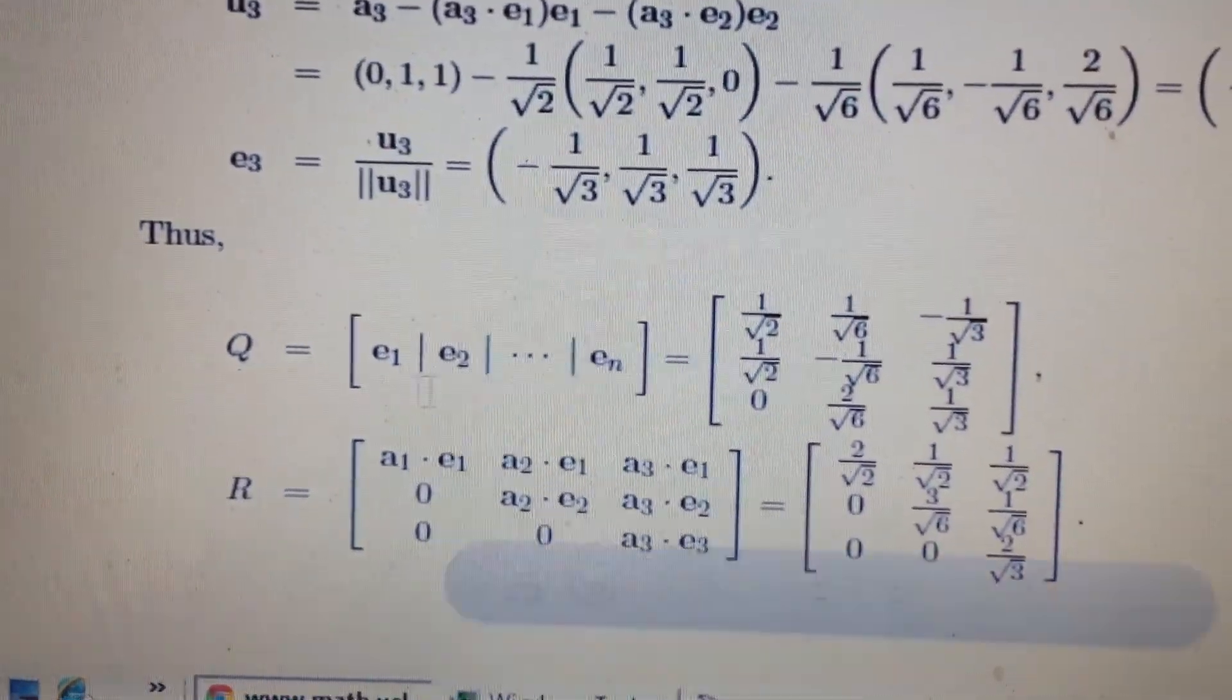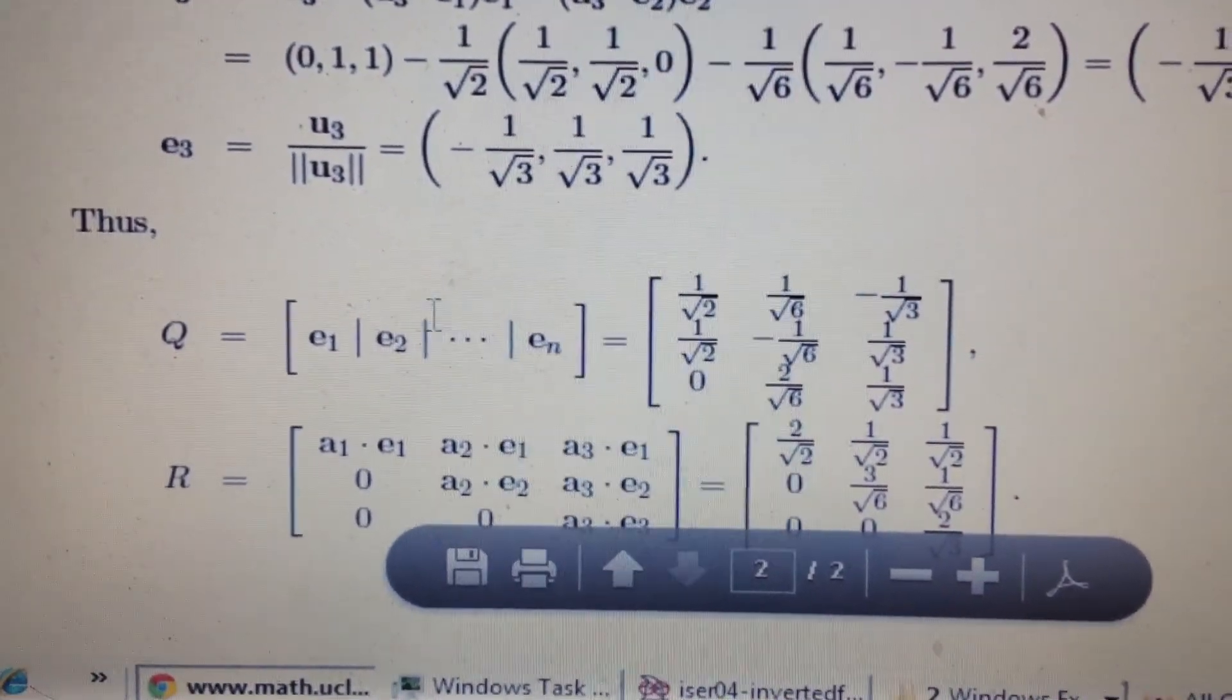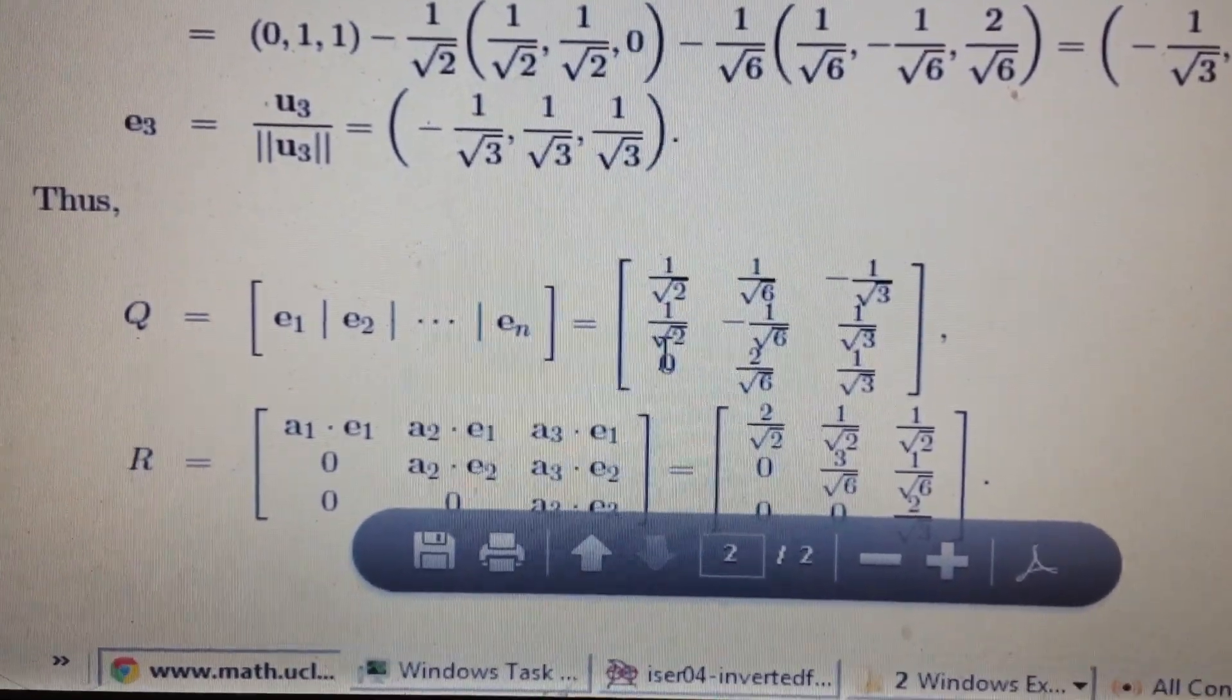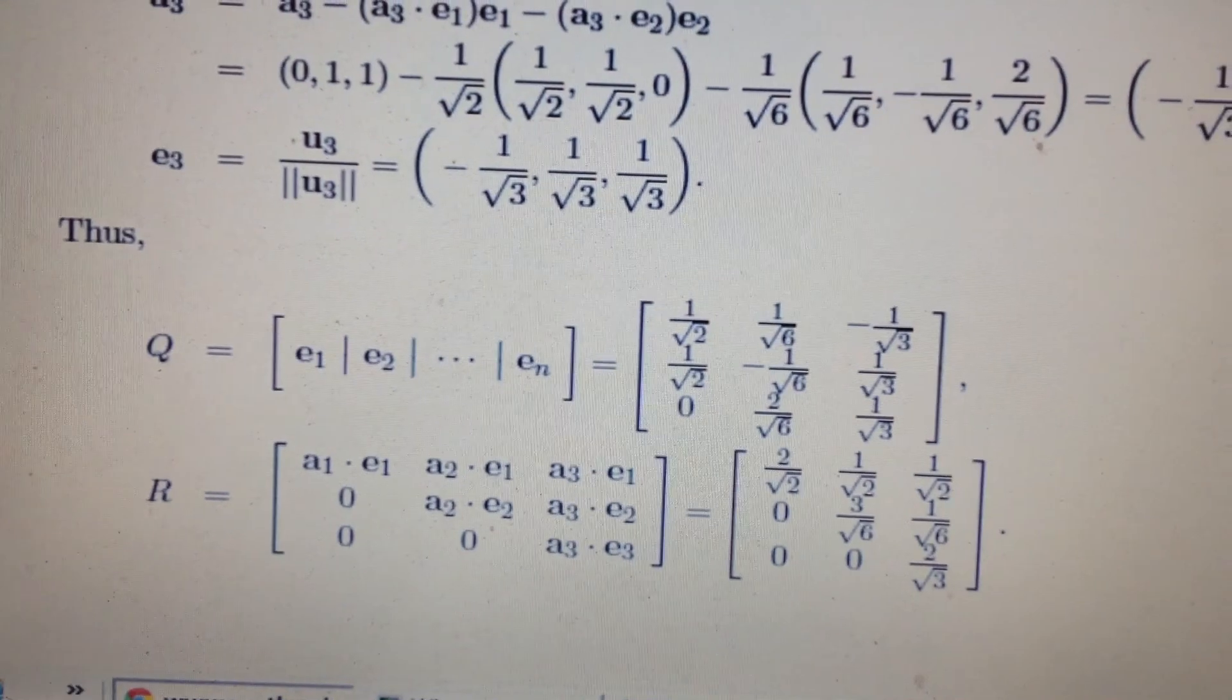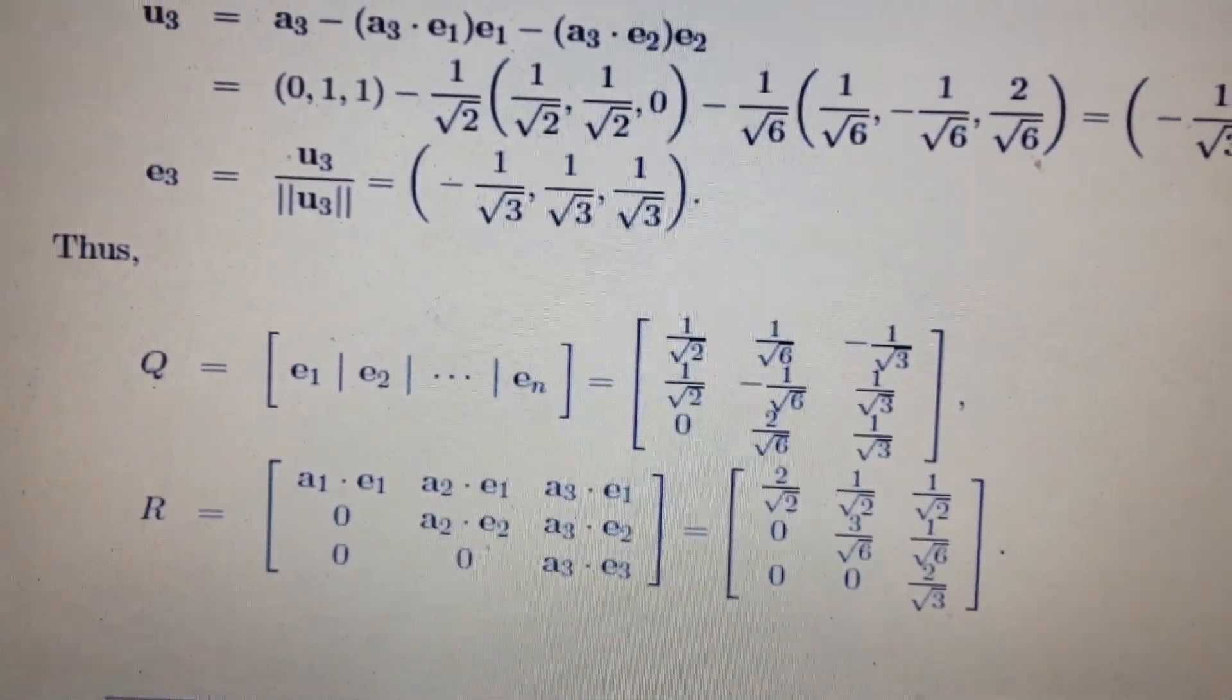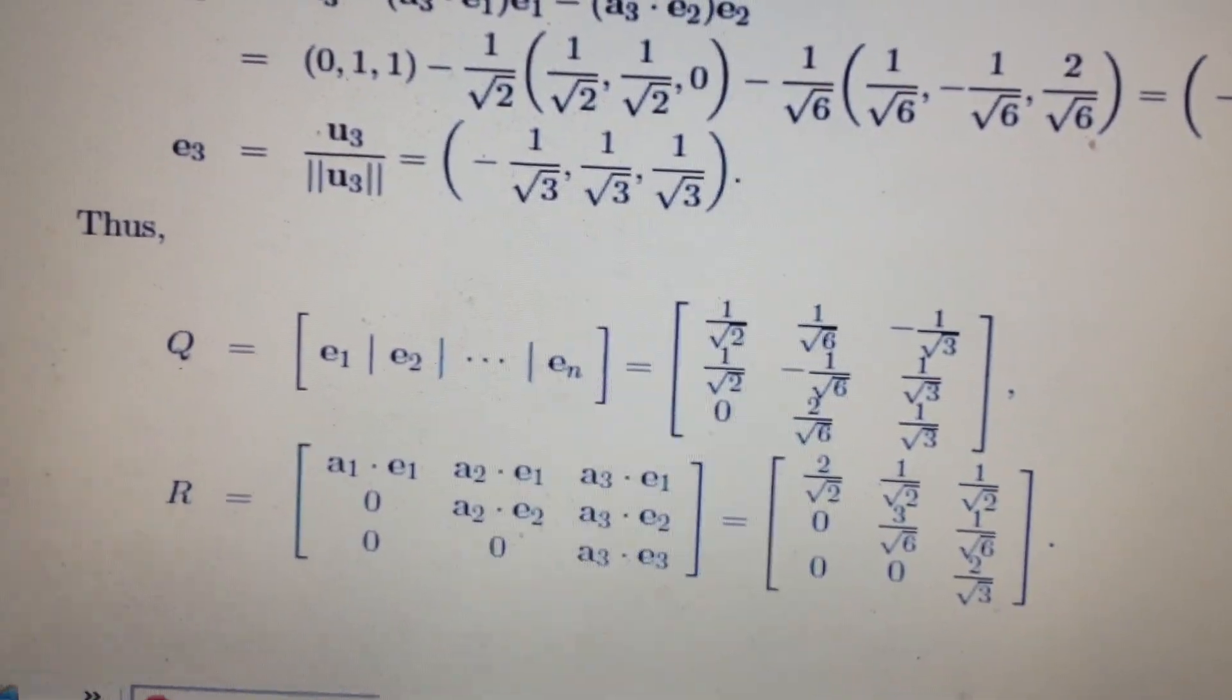And so you get Q as E1 through EN, which is an orthogonal matrix of the directions. And you get R, which is the upper triangular matrix, giving you the vectors in those directions.